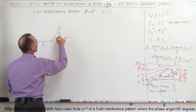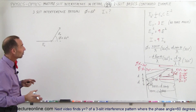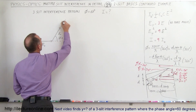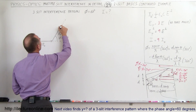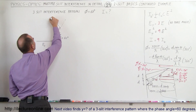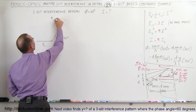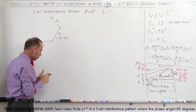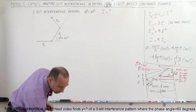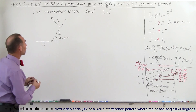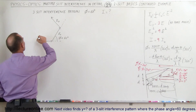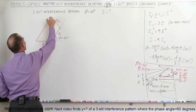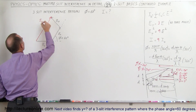This is E sub-naught. Then we have a third phasor that is 60 degrees relative to this one, which would place it in this direction right there — that would be our third phasor, E sub-naught. We know then that the total sum of the three phasors is a vector sum of the three, which would be this one right here — this would be E total.